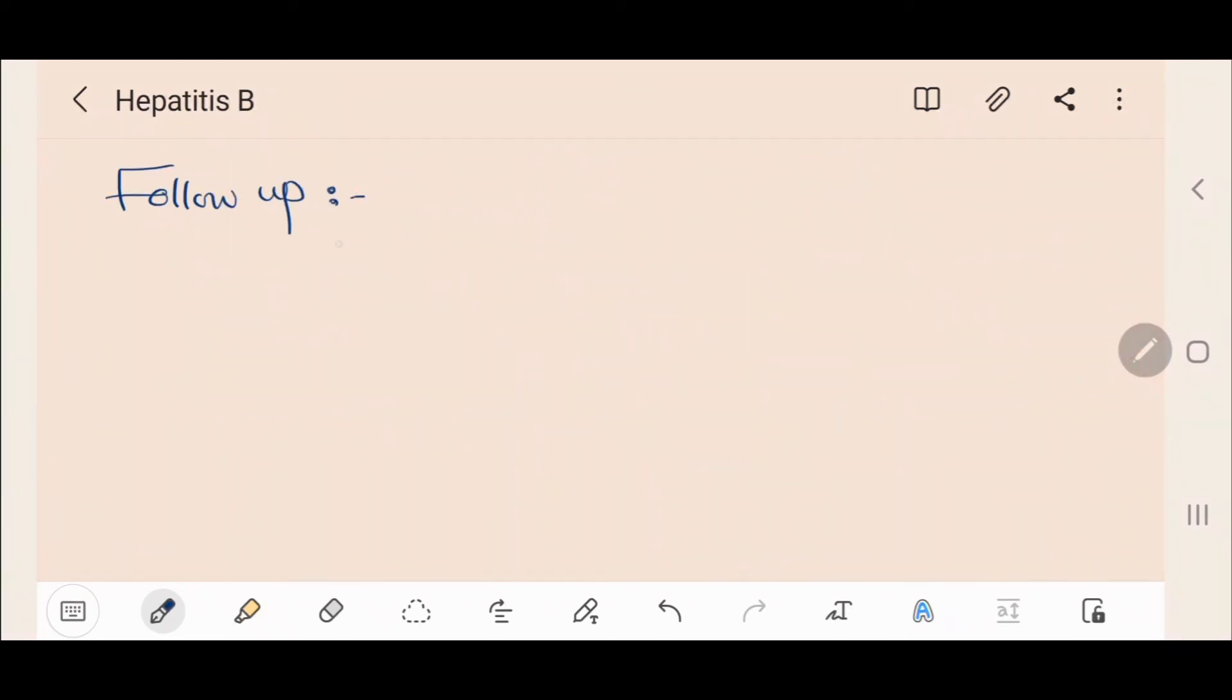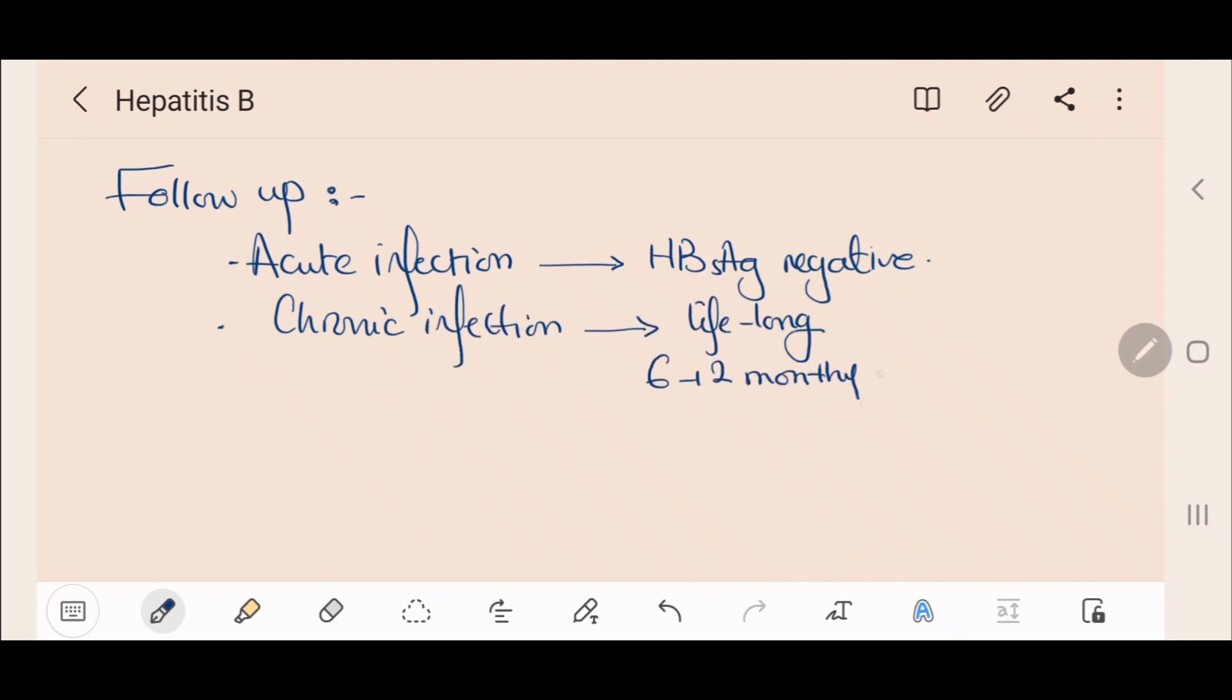Finally, for follow-up, acute infection should be followed until Hepatitis B surface antigen is negative. As for chronic infection, it requires lifelong follow-up including 6-12 monthly Hepatitis B monitoring and yearly Hepatitis B DNA viral load.